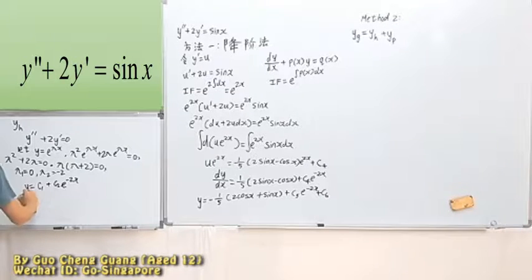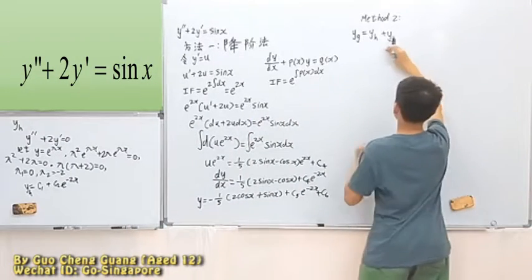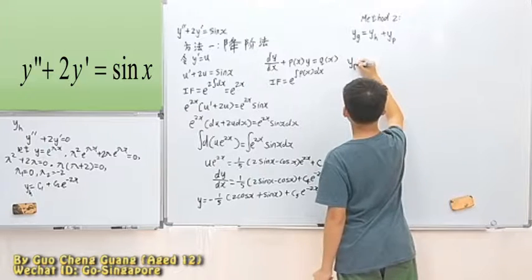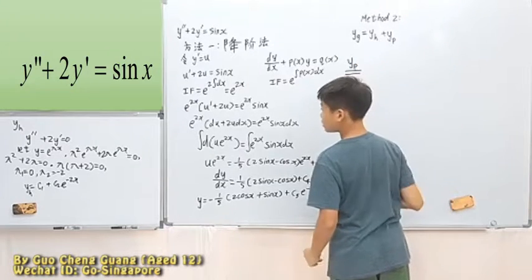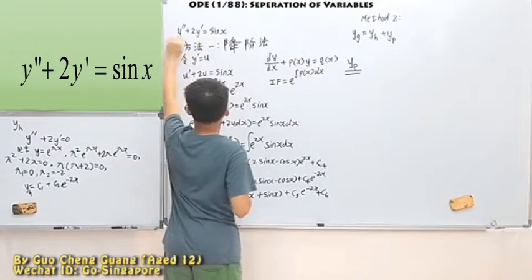And this part is H. Okay? So this is just the homogeneous part. This is part one, or case one. This part two, YP. This for the particular. That means it's this.